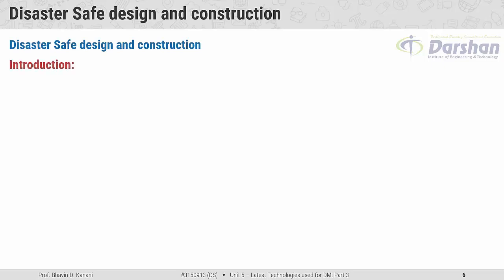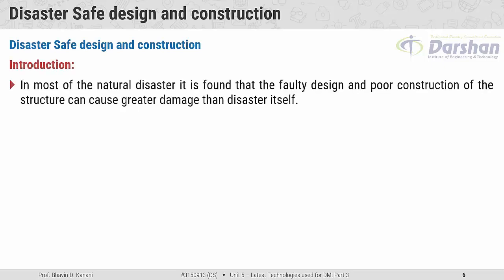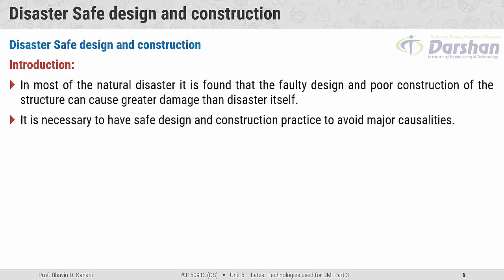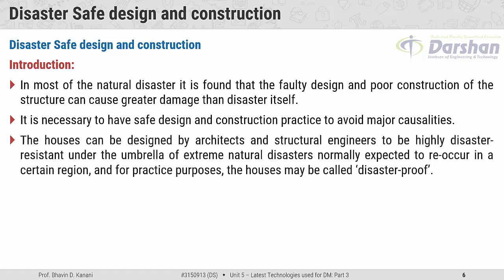Disaster-safe design and construction — introduction. In most natural disasters, it is found that faulty design and poor construction of structures can cause greater damage than the disaster itself. It is necessary to have safe design and construction practices to avoid major casualties. Houses can be designed by architects and structural engineers to be highly disaster-resistant under the umbrella of extreme natural disasters normally expected to reoccur in a certain region, and for practical purposes these houses may be called disaster-proof.